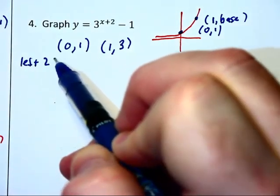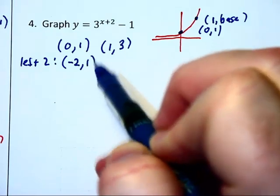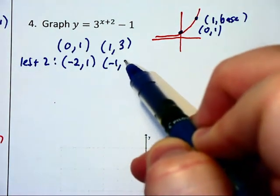This moves our two points over here to (-2,1) and (-1,3).